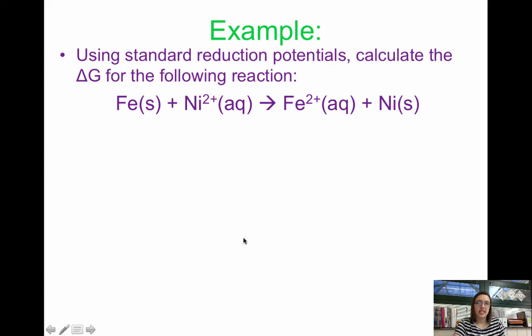Let's look at an example. Using standard reduction potentials from appendix E, from your reduction potential table, calculate the delta G for the following reaction. We're given the balanced equation. We need to calculate delta G using delta G equals negative nFE.